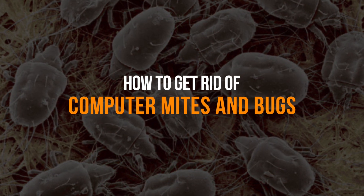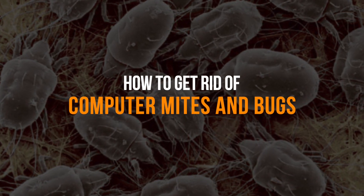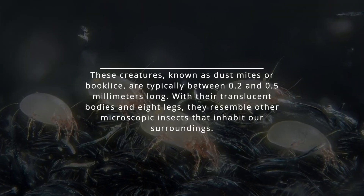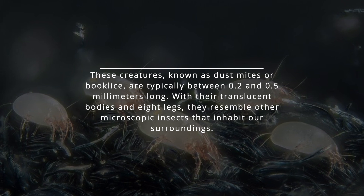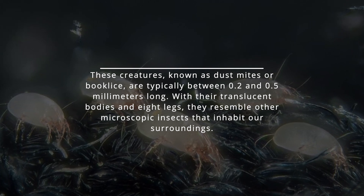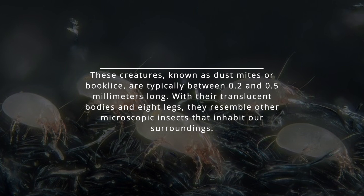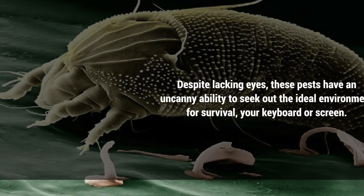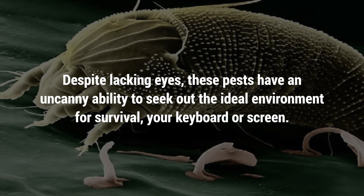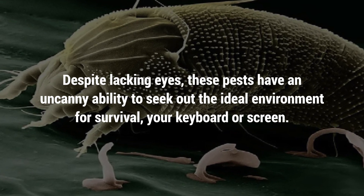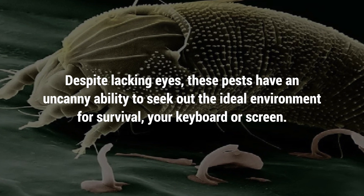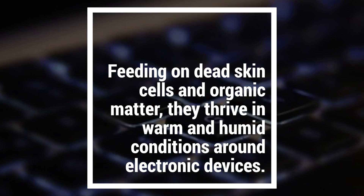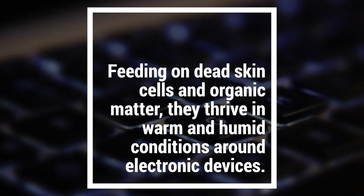Computer bugs and mites may be tiny, but their impact can be surprisingly significant. These creatures, known as dust mites or book lice, are typically between 0.2 and 0.5 millimeters long. With their translucent bodies and eight legs, they resemble other microscopic insects that inhabit our surroundings. Despite lacking eyes, these pests have an uncanny ability to seek out the ideal environment for survival — your keyboard or screen — feeding on dead skin cells and organic matter, thriving in warm and humid conditions around electronic devices.